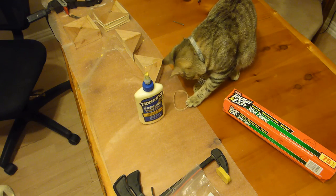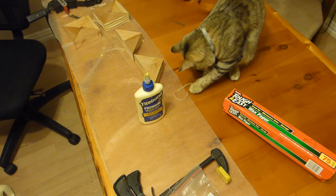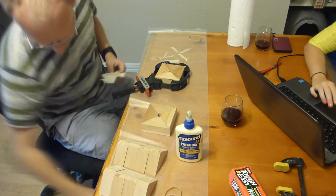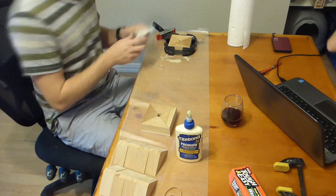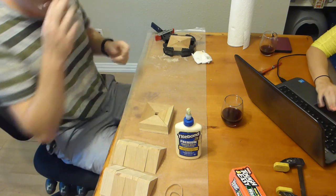So we spent a number of evenings gluing these segments together, getting the vases ready to turn. This is date night at our house. Wine and tight bond, a dangerous combination.